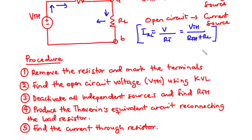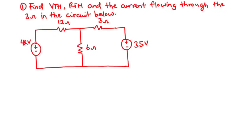Now let's take the first example: find VTH, RTH, and the current flowing through the 3-ohm resistor in the circuit below. For this circuit, we have two voltage sources — 42 volts and 35 volts — and three resistors: 12 ohms, 3 ohms, and 6 ohms. We are going to find VTH, RTH, and the current flowing through the 3-ohm resistor.